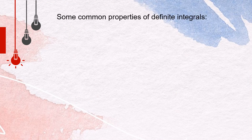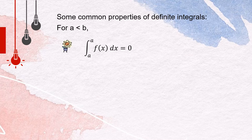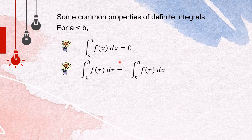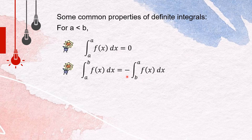Here are some common properties of definite integrals which can be used to evaluate them easily. For a value of a less than b: when the lower and upper limits are the same, the integral is zero. When the upper and lower limits are interchanged, the value of the integral becomes negative.